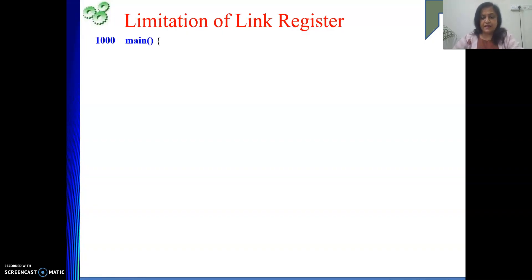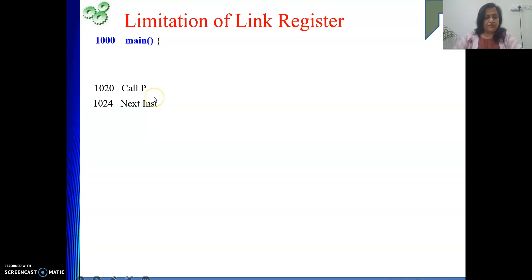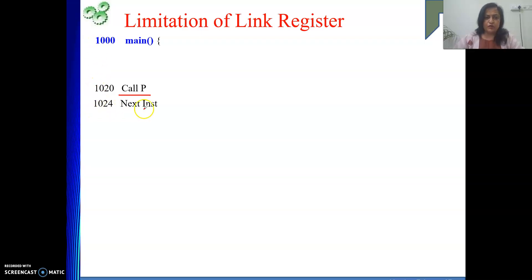What is the problem associated with the link register? We will take up one example. Say we are executing one program that will start from main. The instructions for main start in memory at address 1000. We keep executing instructions and in main, say we are calling one function. To call a subroutine, we use the instruction call P, meaning we are calling a function whose symbolic name is P. The next instruction is located at 1024.